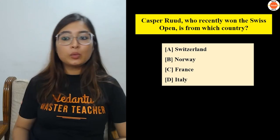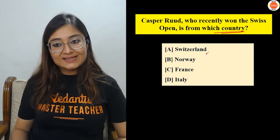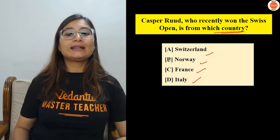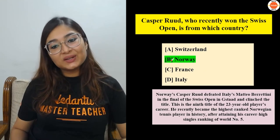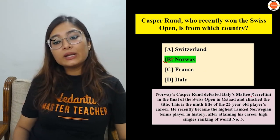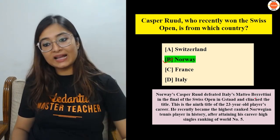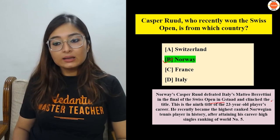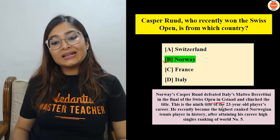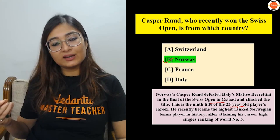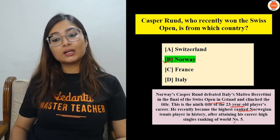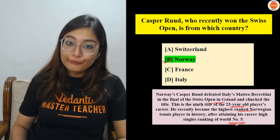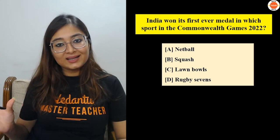Next question: Casper Ruud, who recently won the Swiss Open, is from which country? Options: Switzerland, Norway, France, or Italy. The correct answer is Norway — he is the highest ranked Norwegian tennis player, having attained his career-highest singles ranking of world number five.